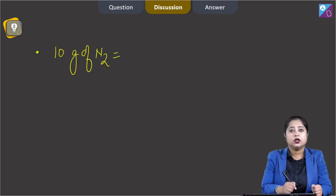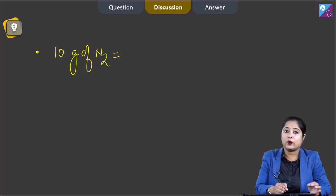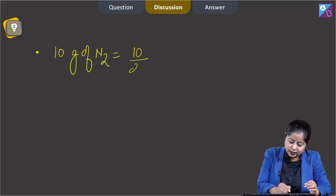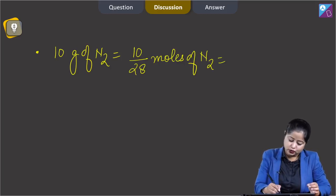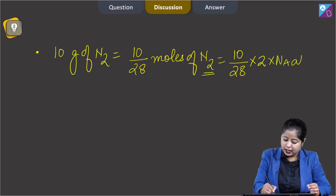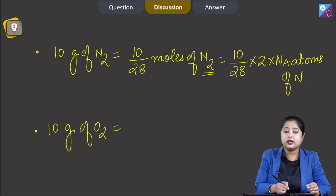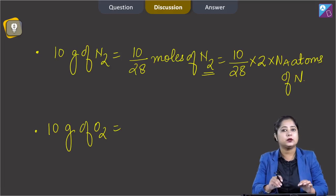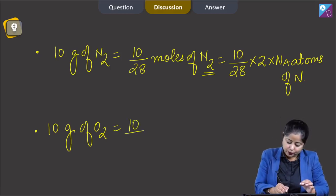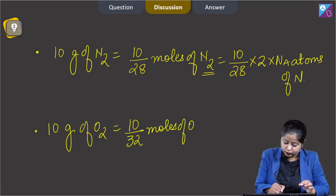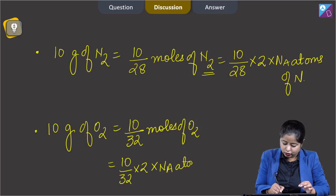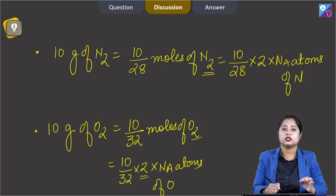Let's calculate. For 10g of N2: moles = 10/28, and since atomicity of N2 is 2, number of atoms = (10/28) × 2 × NA. For 10g of O2: moles = 10/32, and since atomicity of O2 is 2, number of atoms = (10/32) × 2 × NA, where NA is Avogadro's number.